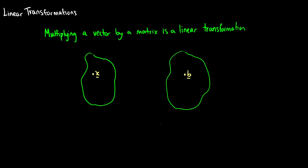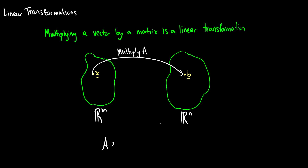In this video we're going to talk about linear transformations. A linear transformation means multiplying a vector by a matrix. If we take a vector x in our domain and multiply it by a matrix A, we get a vector b in our co-domain. So we take a vector from the domain, multiply by a matrix, and get to the co-domain. We can say that Ax = b is a linear transformation.